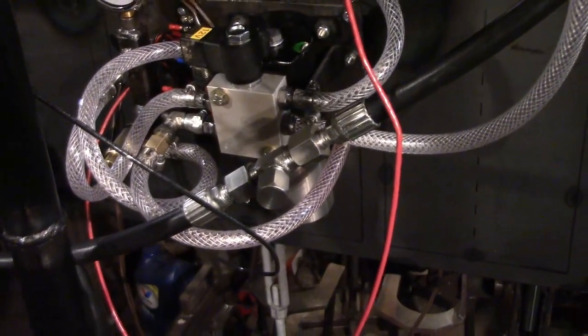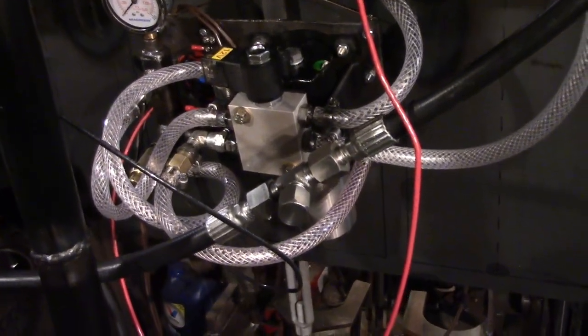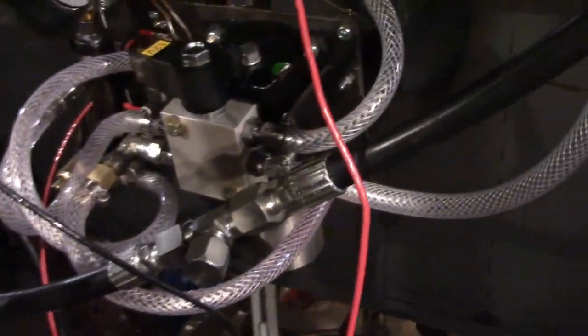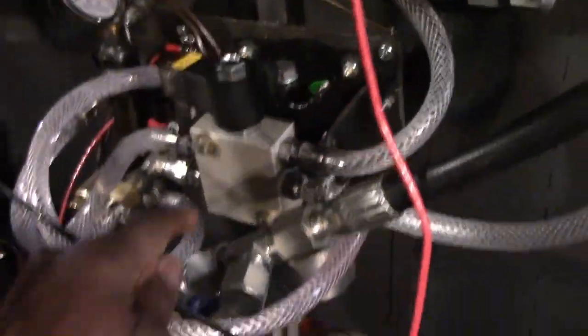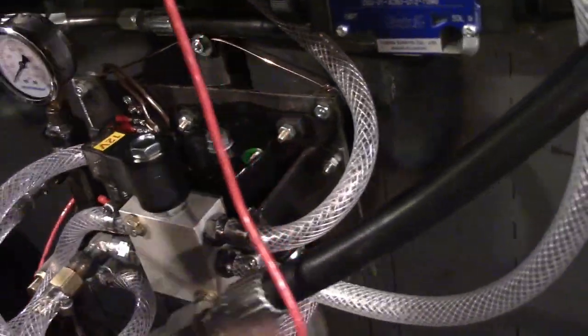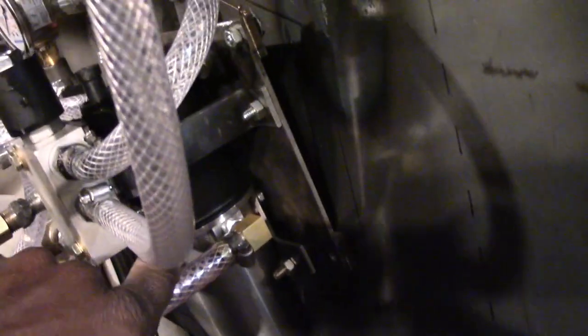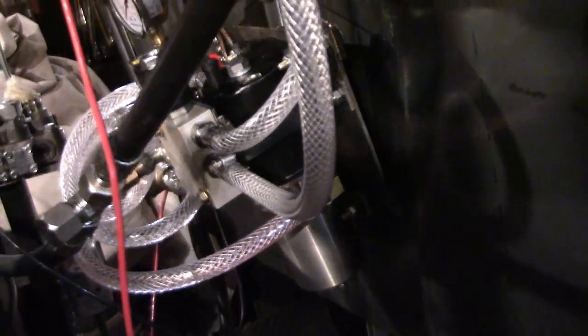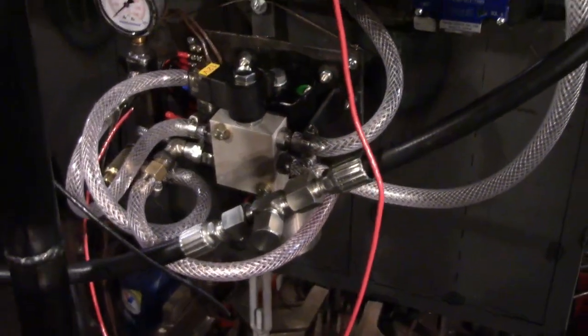I just threw it together from miscellaneous parts. Basically, the reservoir for the hydraulic fluid is right there, attached to the pump here. This unit is actually the hydraulic pump from a Ford Mustang for activating the cylinders that raise and lower the convertible top.